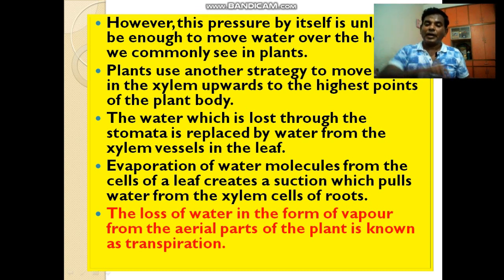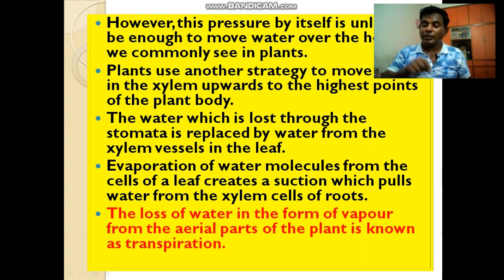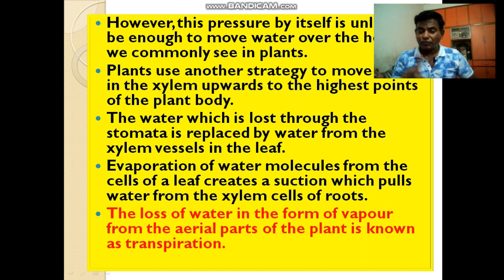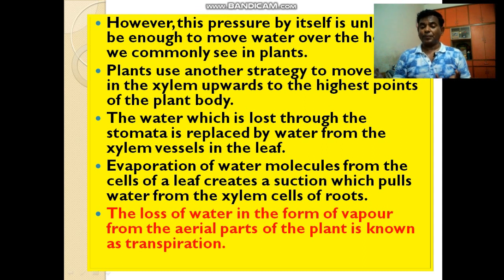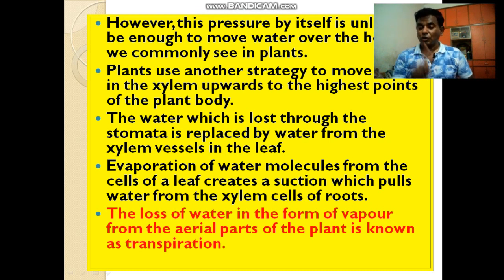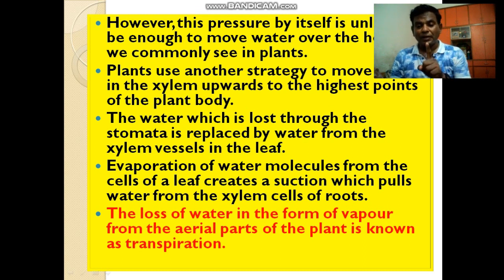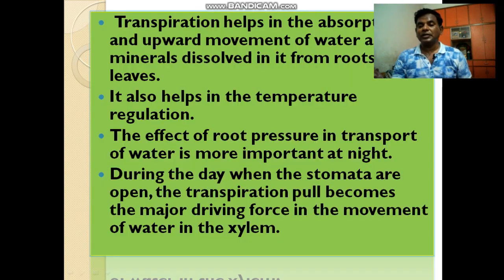This pulling function continuously takes place. The evaporation of water molecules from the cells of the leaf creates a suction which pulls water from the xylem cells of the root. The loss of water in the form of vapour from the aerial parts of the plant is known as transpiration.